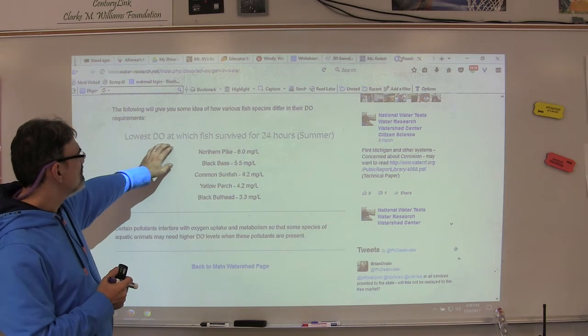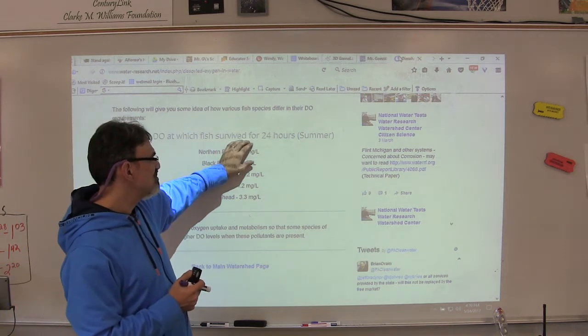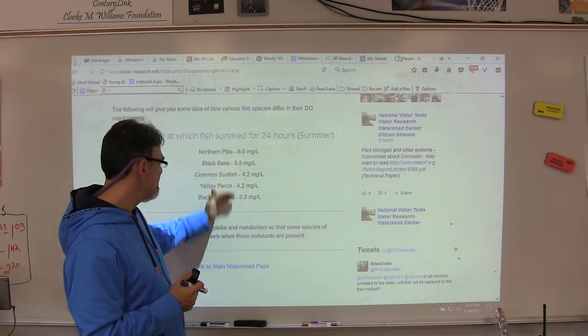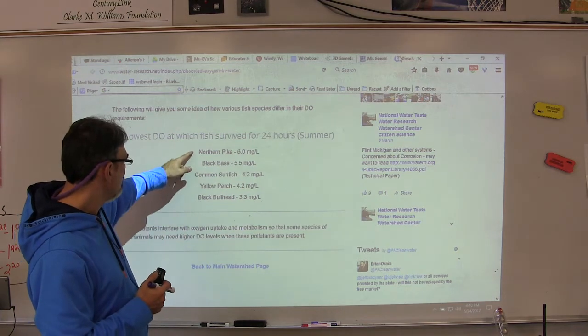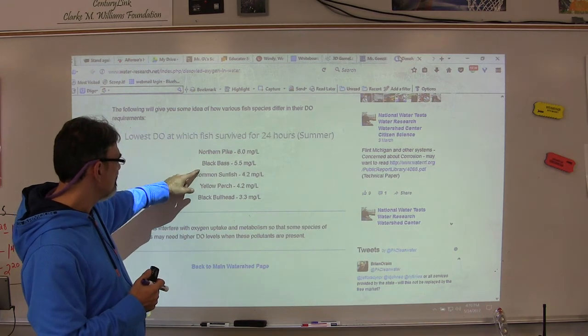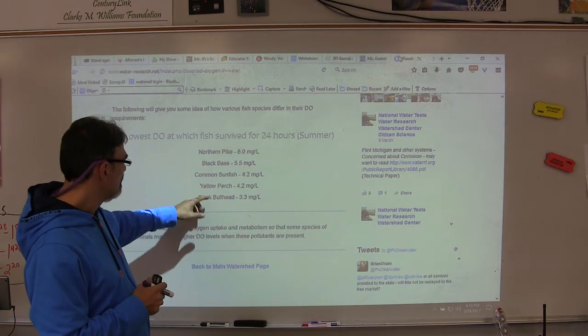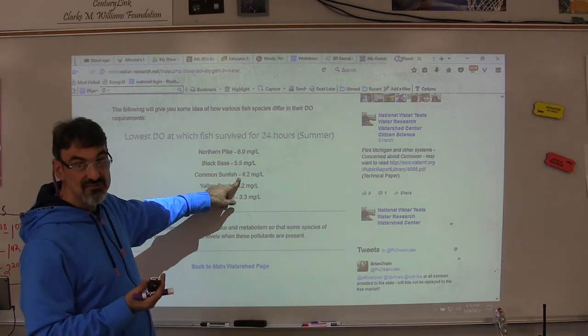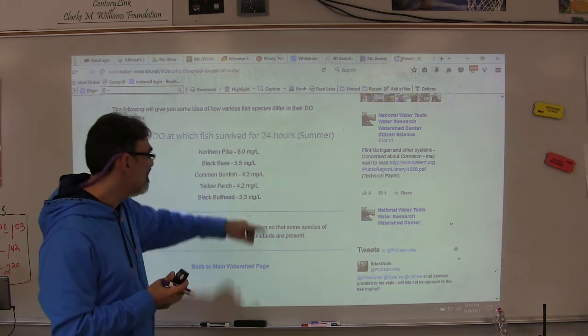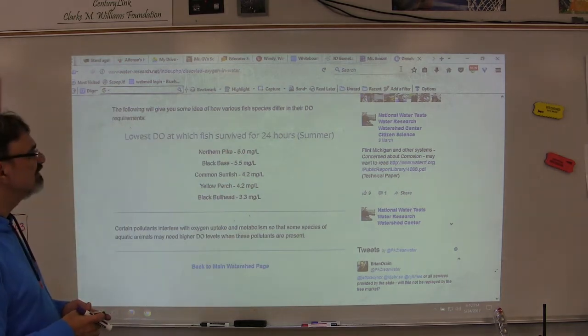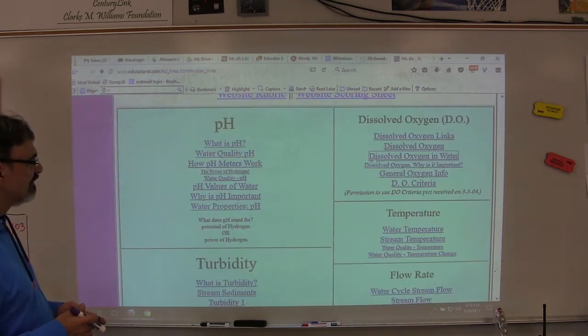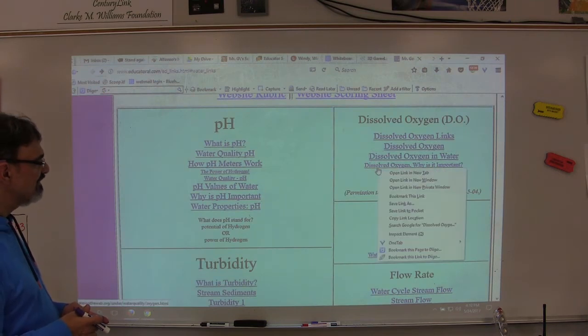And here you've got the lowest DO at which fish survived for 24 hours in the summer. Let's see, we don't have salmon there, but northern pike, six milligrams per liter. Common sunfish, which we do have pumpkin seed sunfish in our creek, 4.2 milligrams per liter. So that's what you have there.